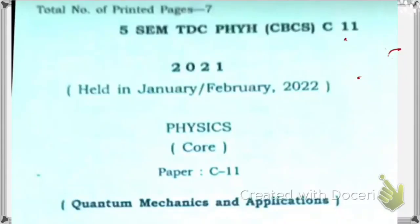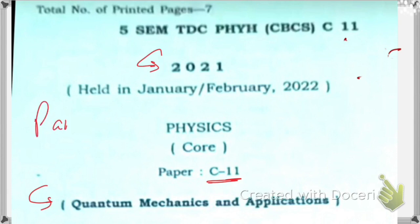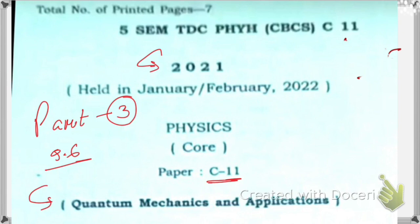Hello friends, today we're going to solve a quantum mechanics physics paper C11 of 2021. I have already made two videos on it — links are given in the description box — part one and part two. So this is part three, and in this video we are going to solve from question number six. Please subscribe the channel if you are new, share with your friends, hit the thumbs up button, and hit the bell icon so you get notified when new videos are uploaded.